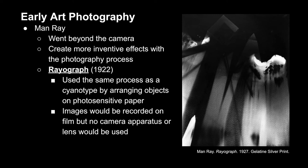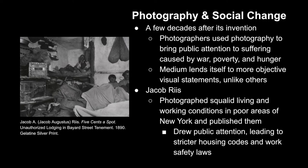A few decades after the invention of photography, many photographers started to use the medium to bring public attention to social issues such as suffering caused by war, poverty, and hunger. With the nature of the medium, especially during this time period, it lends itself to a more objective representation of reality compared to text or drawings. One such photographer, Jacob Riis, photographed the squalid living and working conditions in poor areas of New York and published them, drawing public attention which led to stricter housing codes and work safety laws.